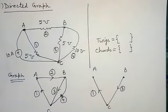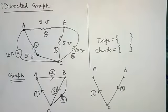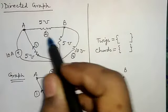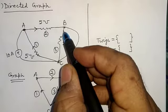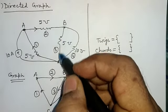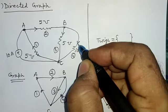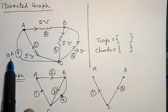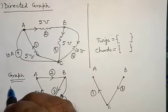Since in the circuit diagram direction is not given, we can arbitrarily select the direction. The direction of branch 1 is towards A. The direction of branch 2 is between A and B. Between B and C for 5 mho, I will consider this direction. And for 10 mho, I will consider this direction. By open-circuiting the 10 ampere current source, this will be the oriented graph. The first part — the oriented graph or directed graph — is now completed.